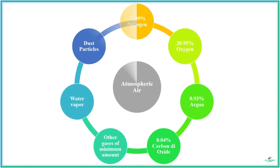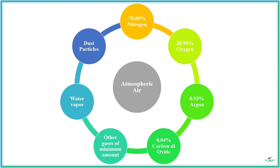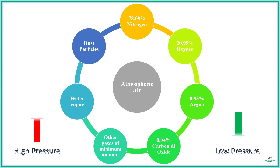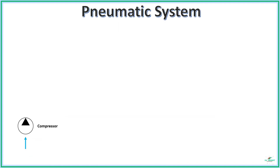Atmospheric air is a mixture of several components, including water vapors and dust particles. Typically, air flow happens from a high-pressure region to a low-pressure region. So it is clear that the pressure of the air needs to be increased if we want to transport the air to our desired system, and also only pressurized air is capable of producing usable work.